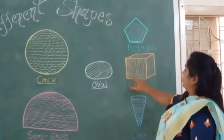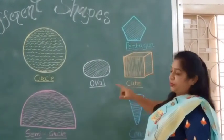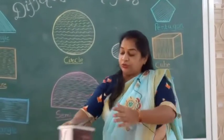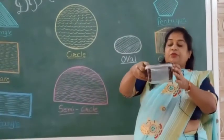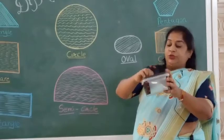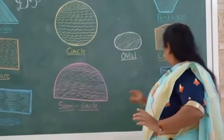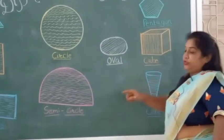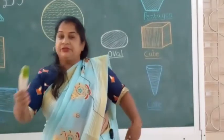And next is cube. Cube. See, this is a cube. And this is also example of cube. Box is also a cube. And this is cone. Cone shape is like this.